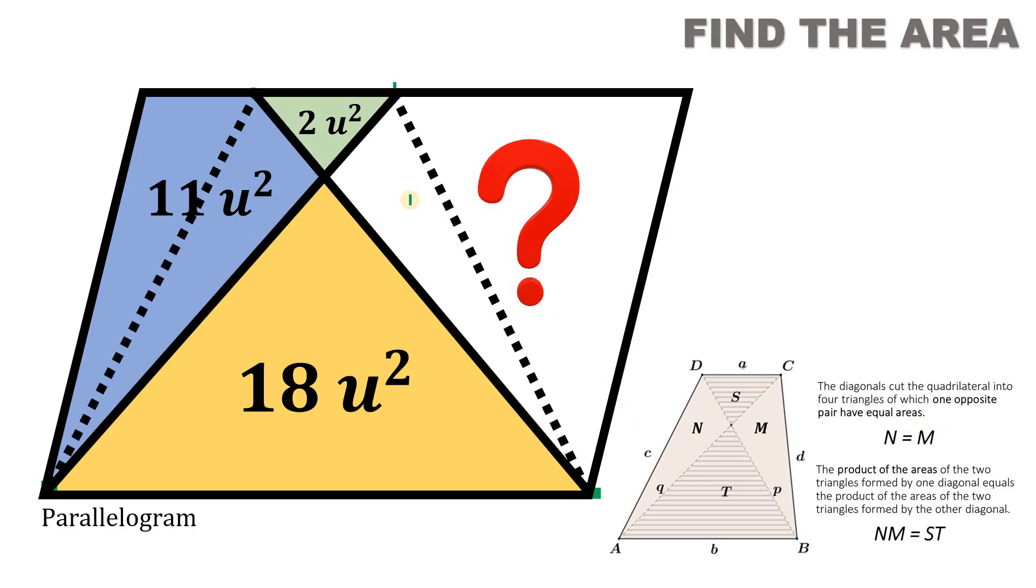And also, using the first concept, these two triangles have the same area. Let's call this X. Now, using the second concept, if we multiply these two regions, X times X is equivalent to the product of 2 and 18. So if X squared equals 2 times 18, that's 36. And get the square root on both sides, we get that X equals 6. So the area of this triangle simply equals 6 square units.